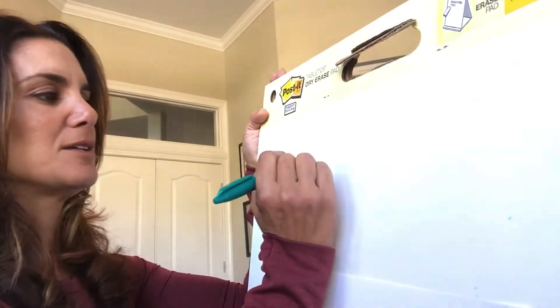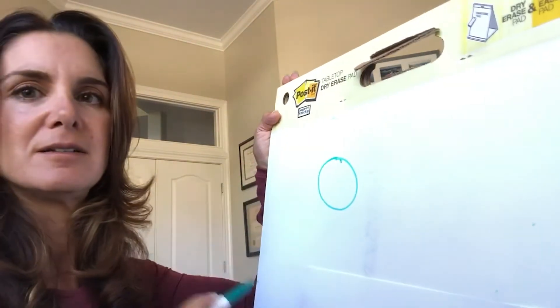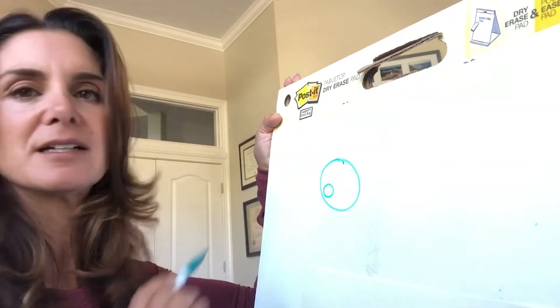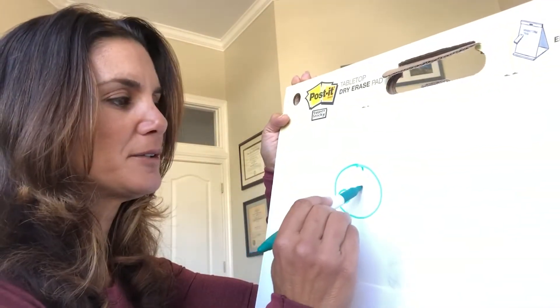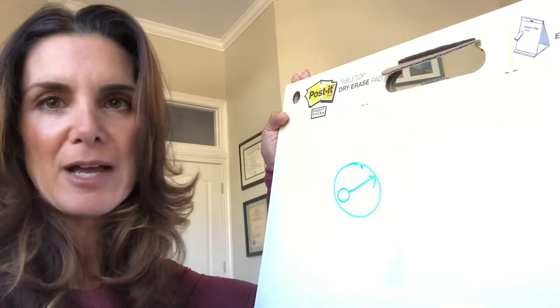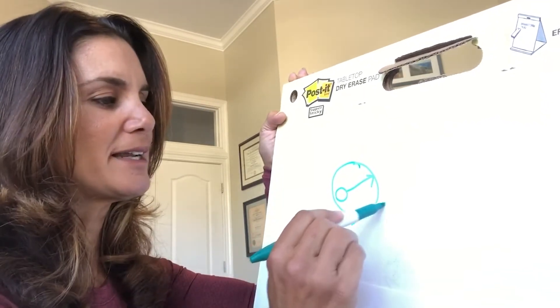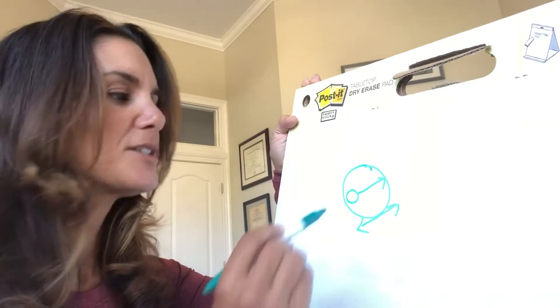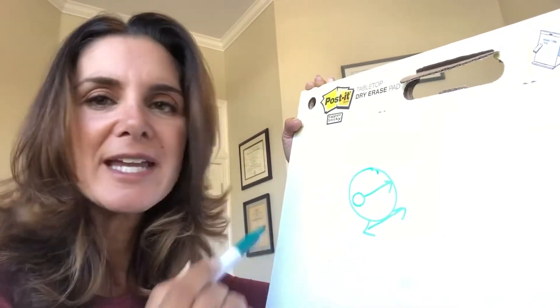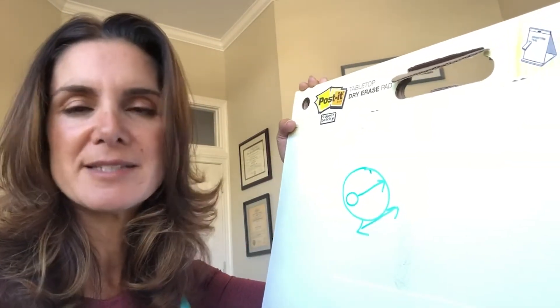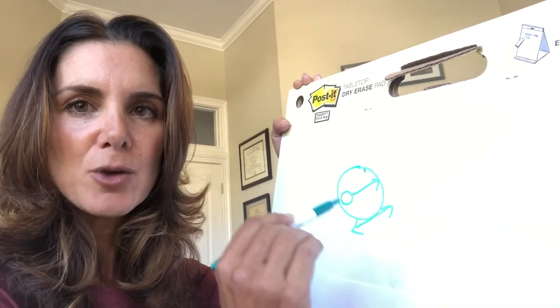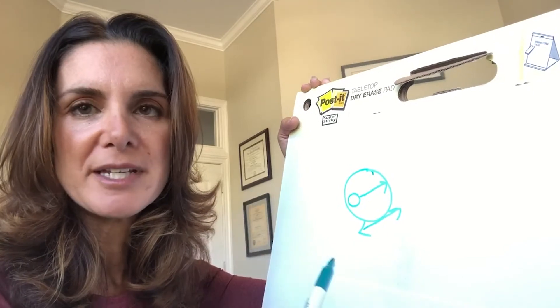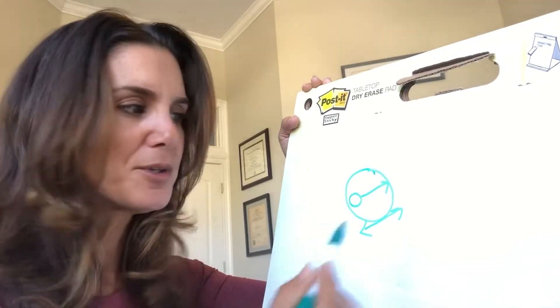So a follicle is a fluid-filled sac that holds an egg. As an egg matures, the follicular fluid increases in amount, which increases the diameter of the follicle. Eggs are microscopic; we can't see them by ultrasound. We can't see them with the naked eye. So by measuring the diameter of this follicle, we are indirectly measuring the maturity of the egg.